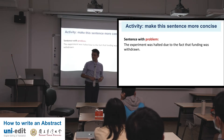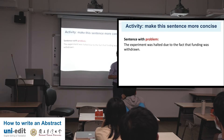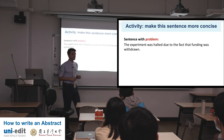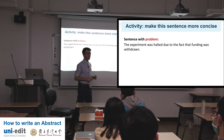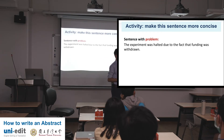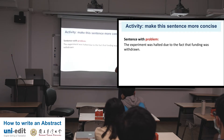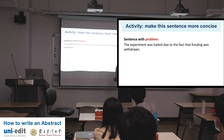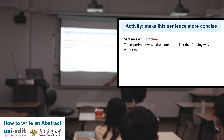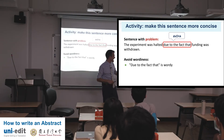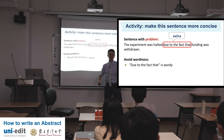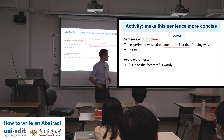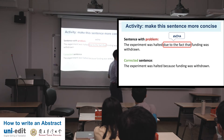Another sentence with a problem: 'The experiment was halted due to the fact that funding was withdrawn.' Where's the problem? 'Due to the fact' — you can say because. The experiment was halted because funding was withdrawn. And this is one of those situations where 'due to the fact' sounds academic and feels smart, but that doesn't always mean it's appropriate. The corrected sentence: 'The experiment was halted because funding was withdrawn.' Avoid wordiness — 'due to the fact' is wordy.